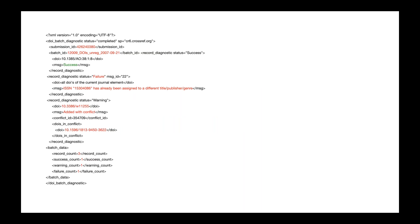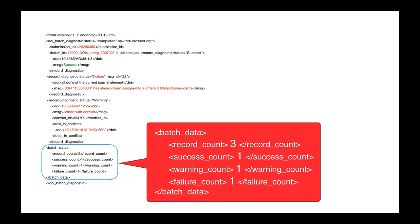Here's an example of a submission log. The most important part is at the bottom — the batch data section is a summary of your log results. If the record count and success count match, you're done, everything was processed successfully. If there are any failures flagged in failure count, you'll need to address them. A failure means your record was not added to our system. A warning means that the record was added and the identifiers are registered and can be used for linking, but there may be something that needs attention.